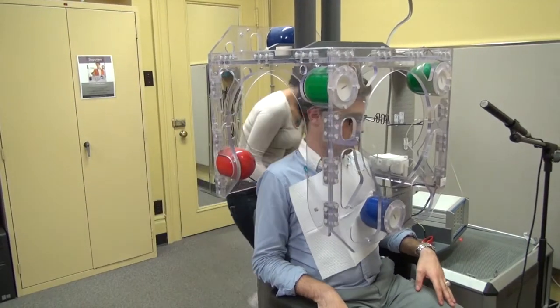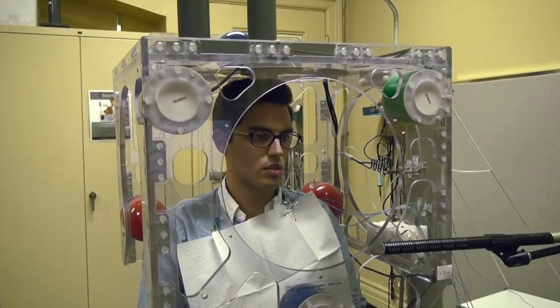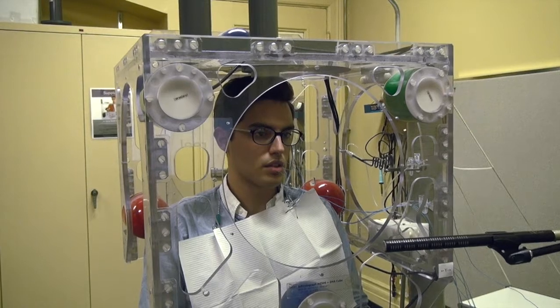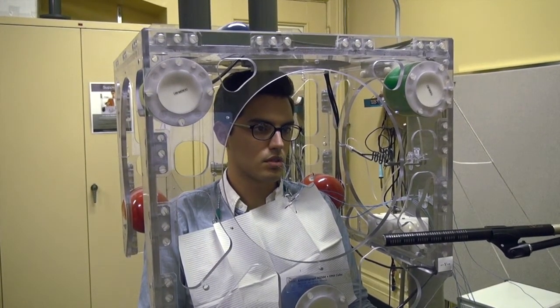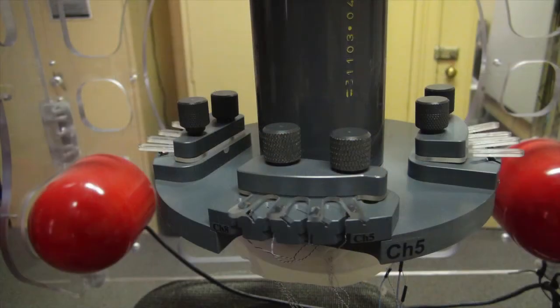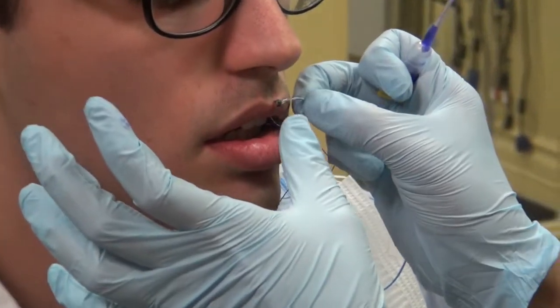An EMA system includes a cube mounted with electromagnetic transmitters that surround the head, neck, and shoulders of the participant, and coils with electrode sensors that are temporarily glued to the participant's articulators.